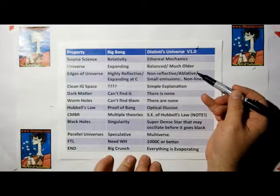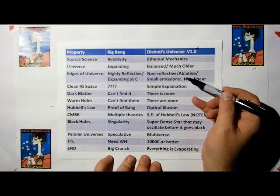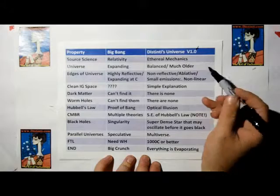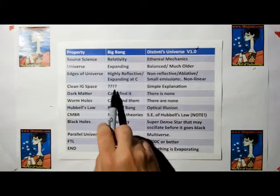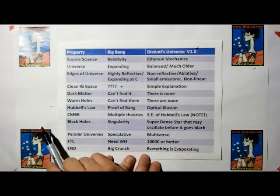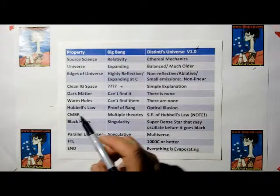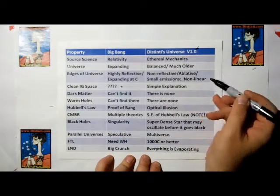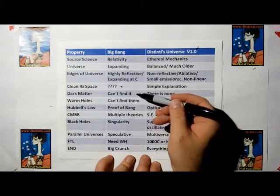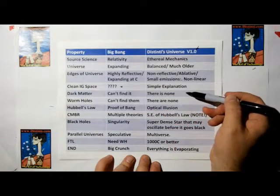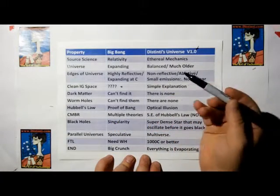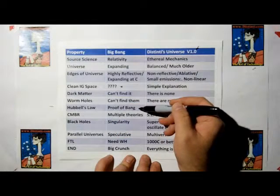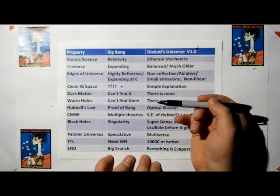For Big Bang Theory, there's no explanation I could find of why intergalactic space is so clean. In Distinti's universe, it's a very simple explanation. Dark matter, they can't find it. In Distinti's universe, there is none. Wormholes, they can't find them. Distinti's universe, there is none. Hubble's law, they say is proof of the Big Bang. To me, it's nonsense science.